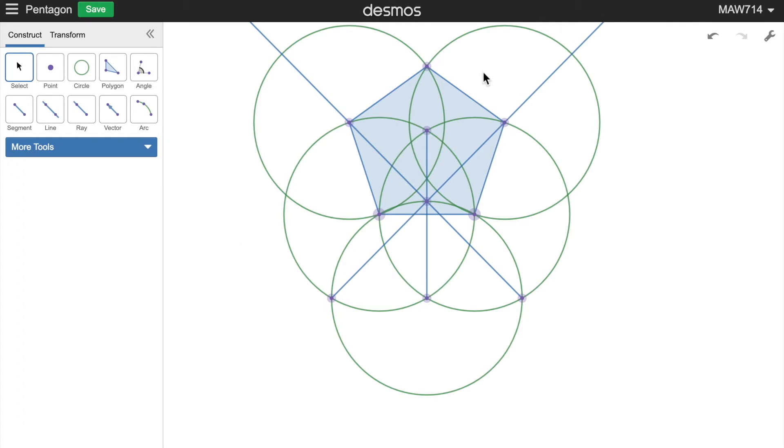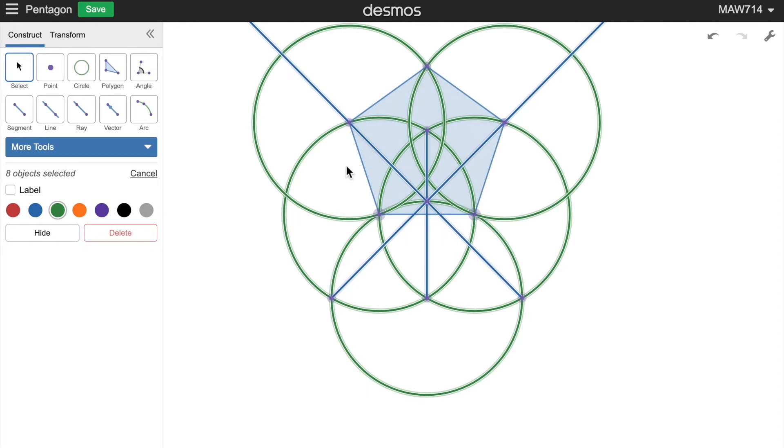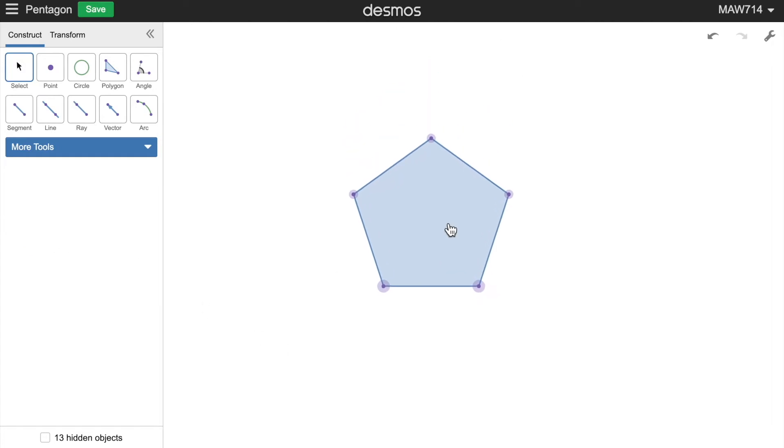So now as usual I'm just going to hide everything that's unnecessary. We do this by selecting everything that we don't need, then pressing hide here. I need some points. There we go. Now we just have our pentagon.